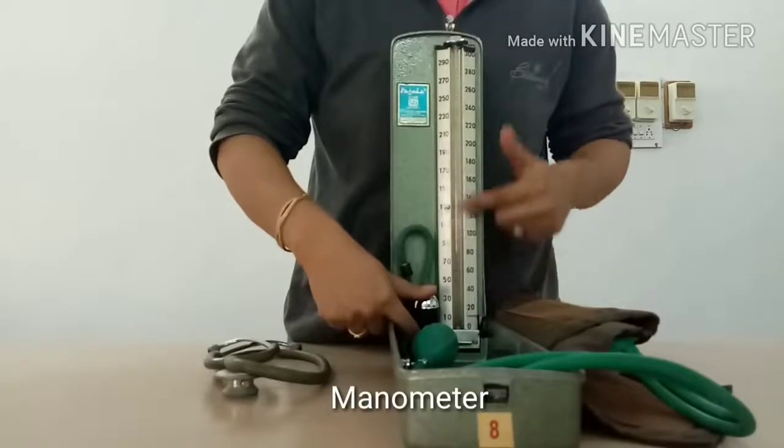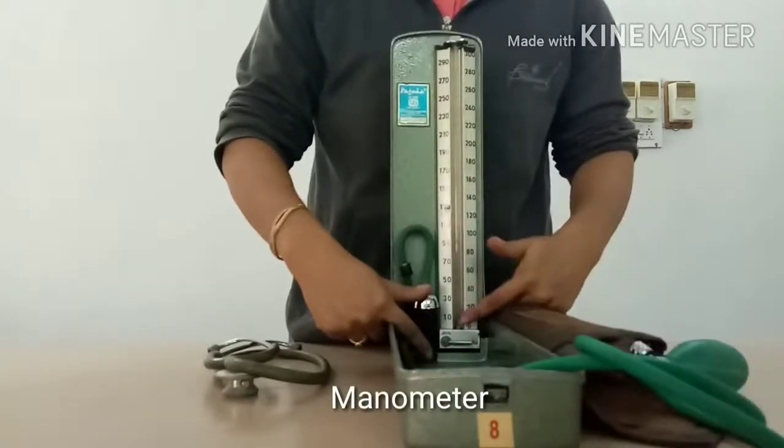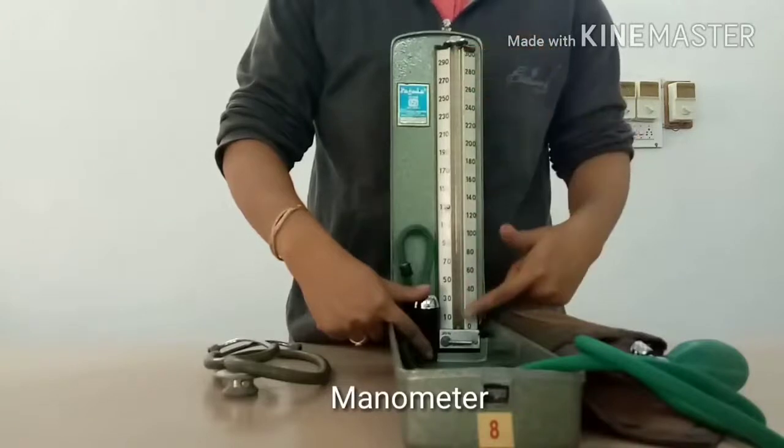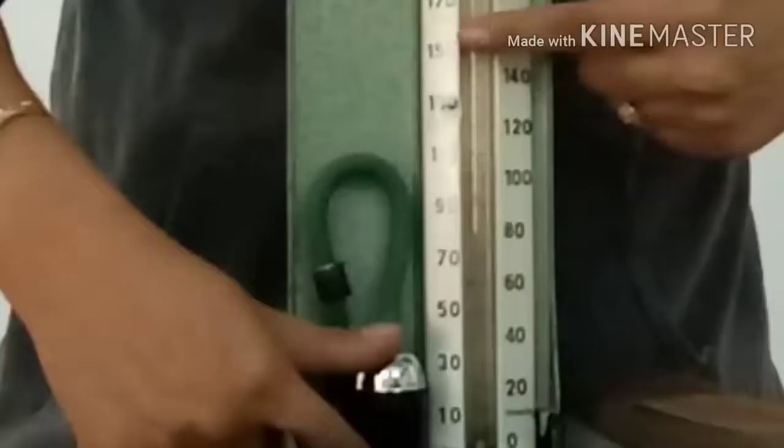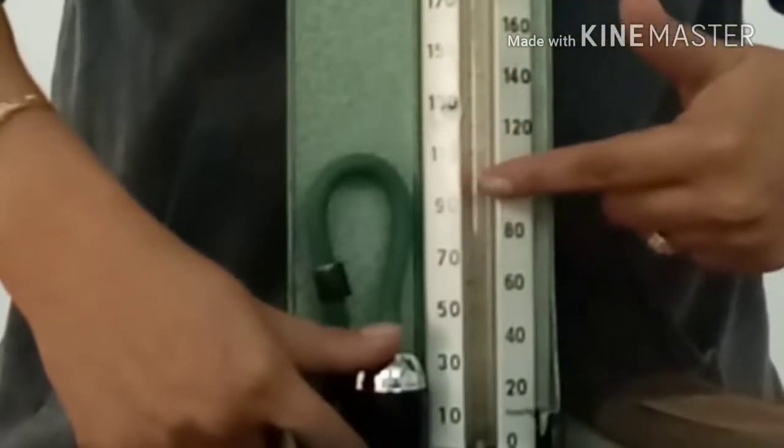The broader limb is the reservoir for mercury and the narrow limb is graduated from 0 to 300 mm with the smallest division corresponding to a reading of 2 mm of mercury.